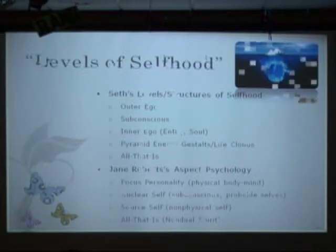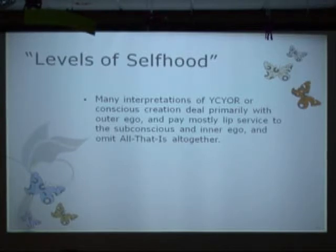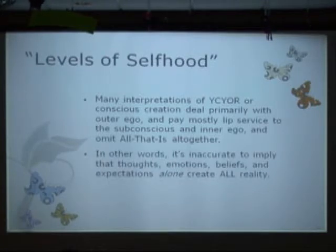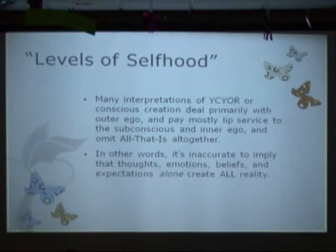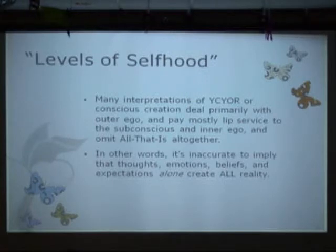So these are the levels of selfhood in the Seth material. Many interpretations of 'you create your own reality' or conscious creation unfortunately deal primarily with the outer ego and pay mostly lip service to the subconscious and inner ego, and omit all that is altogether. This is an observation from my ten years on email lists and in conferences and anecdotal stories — and how people use and interpret the material to explain reality creation. There's a very heavy influence and emphasis on the outer ego. So in my view, it's inaccurate to imply that thoughts, emotions, beliefs, etc., from the nature of personal reality alone create all of our reality.